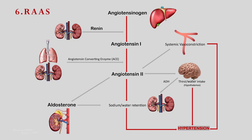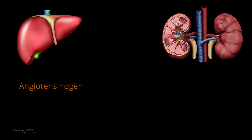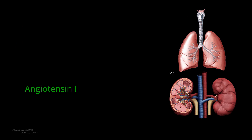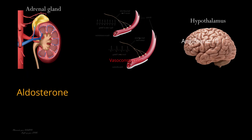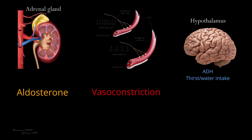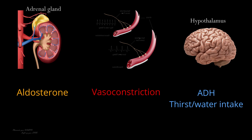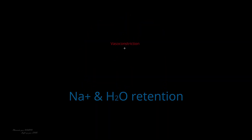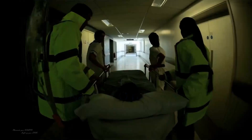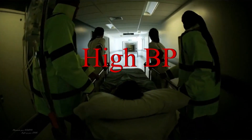The renin-angiotensin-aldosterone system is a hormonal system involved in blood pressure regulation. It is activated by several factors including decreased blood pressure, low blood volume, and sympathetic nervous system activity. Activation can lead to vasoconstriction, sodium and water retention, and increased blood volume — all contributing to maintaining blood pressure within a normal range. However, an overactive or dysregulated system can contribute to the development of high blood pressure.